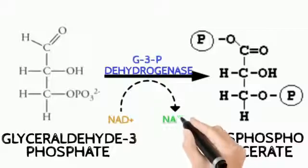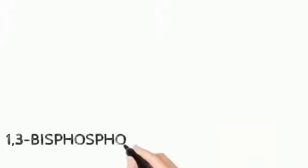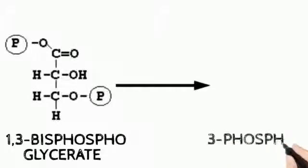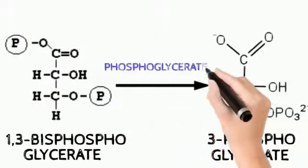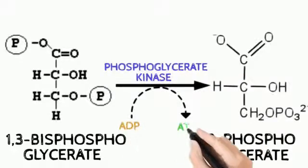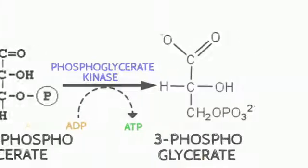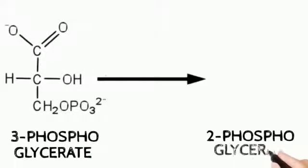In this step, NAD⁺ is converted into NADH. Then 1,3-bisphosphoglycerate is converted into 3-phosphoglycerate by the enzyme phosphoglycerate kinase, and one ATP molecule is generated. Next, 3-phosphoglycerate is converted into 2-phosphoglycerate by the enzyme phosphoglycerate mutase. This is a simple rearrangement process.